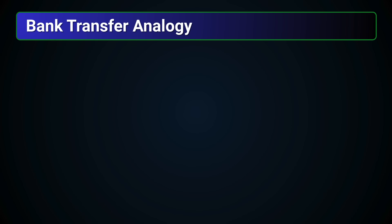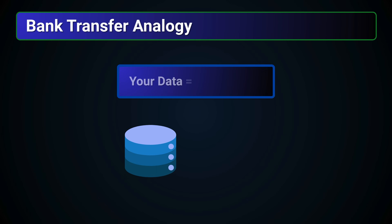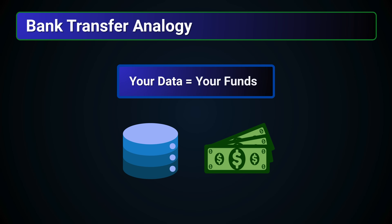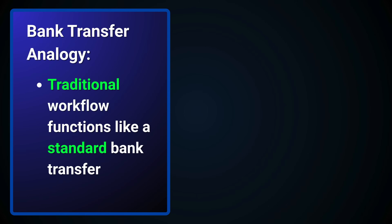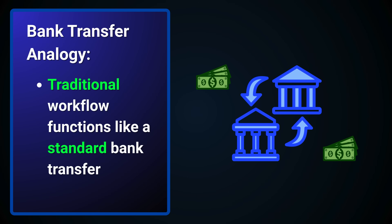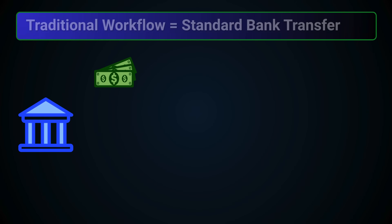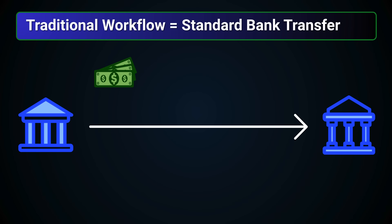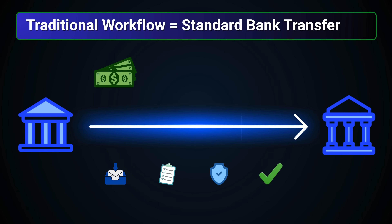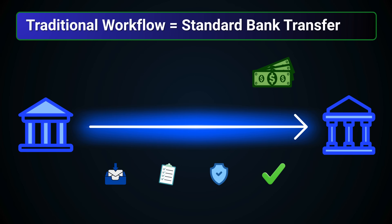An effective way to understand the difference between the two workflow models is to think of your data as the funds in your bank account. A traditional workflow functions much like a standard bank transfer. It follows a defined sequence, produces a consistent record of activity, and adheres to strict security and compliance controls. The outcome is predictable because the process follows a clear set of rules and steps.